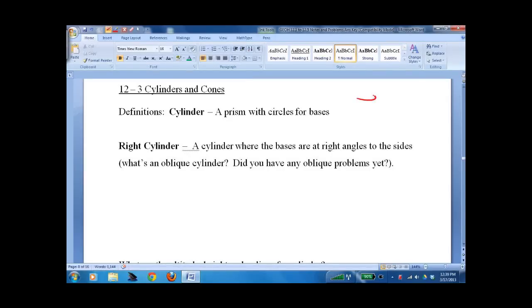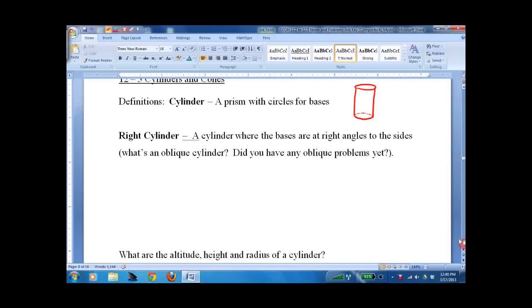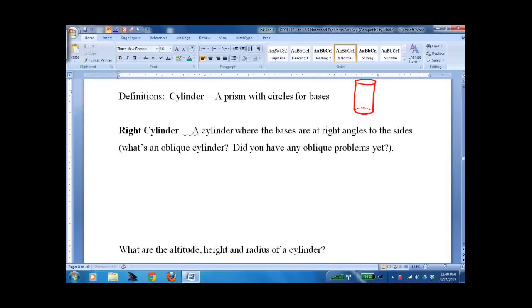Draw your circle on the top. Bring your lines down. Draw half a circle on the bottom and dot the other half in. It's a can of soup. It's a Coke can. Whatever you want.